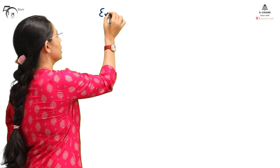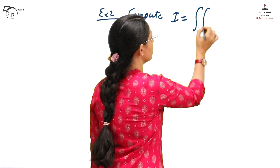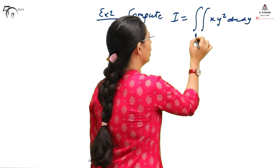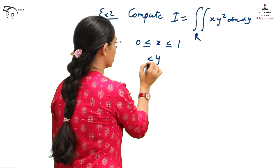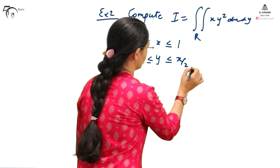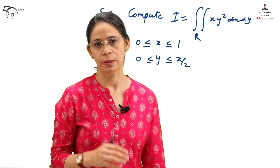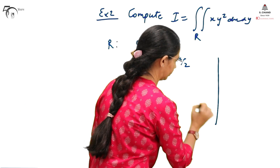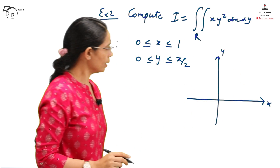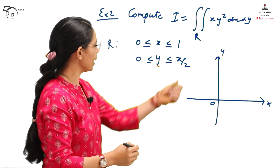We will take Example 2, where we integrate over a non-rectangular region. Compute I = ∬ xy² dx dy over the region R, where x is from 0 to 1 and y is from 0 to x/2. First, we need to sketch the region of integration — this is very important and plays a vital role in the integration. We sketch y = 0 and the line y = x/2.